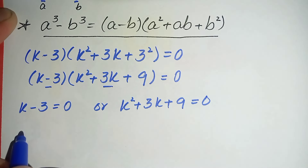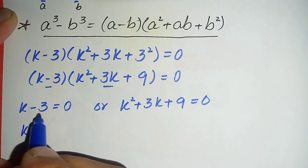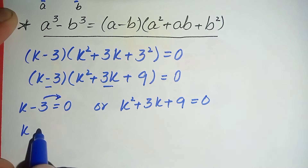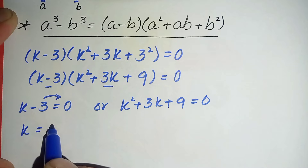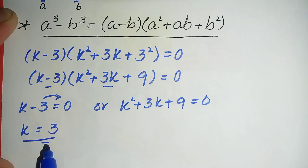First we will solve k minus 3 equals zero. We move the negative 3 to the right hand side, so it becomes positive 3. Therefore k is equal to 3, which is our first real solution.